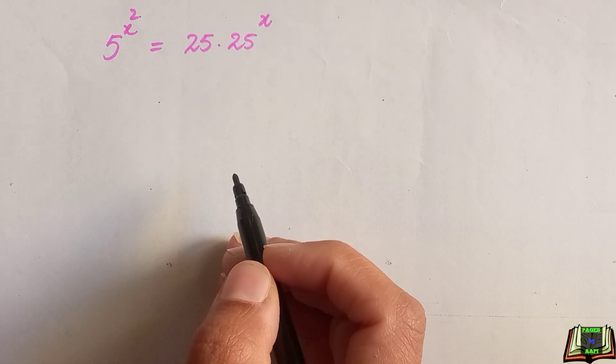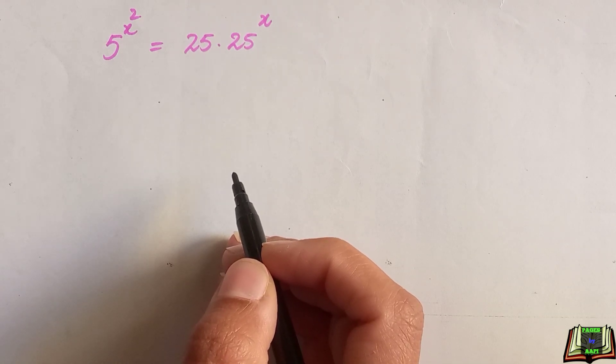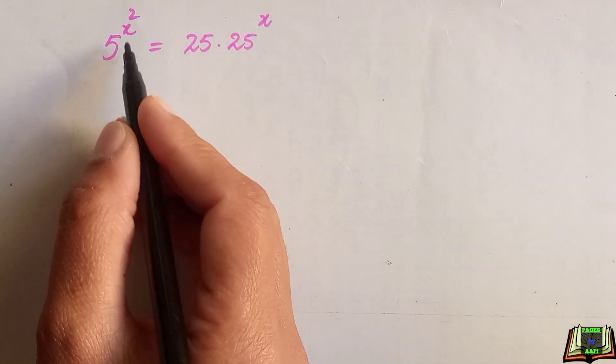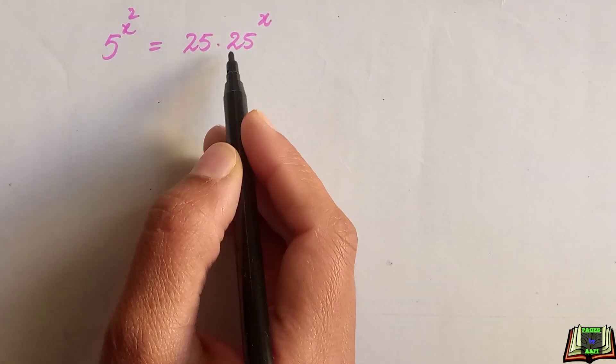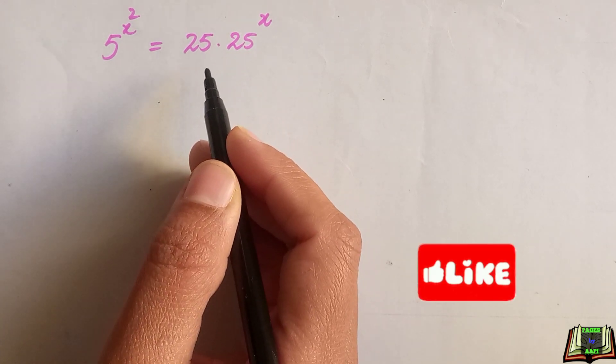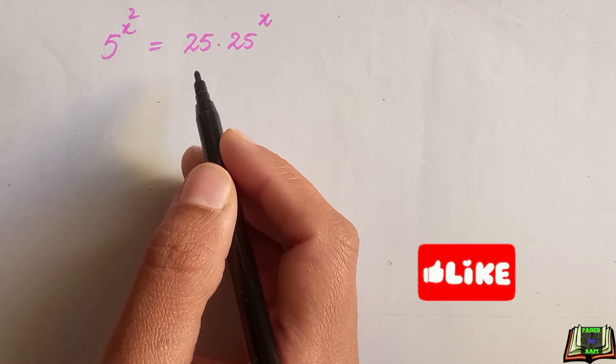How to deal with this type of exponential equation we will see in this video tutorial. If 5 raised to power x raised to power 2 is equal to 25 times 25 raised to power x, we have to find the value of x in this question. So let's get started and see the solution.